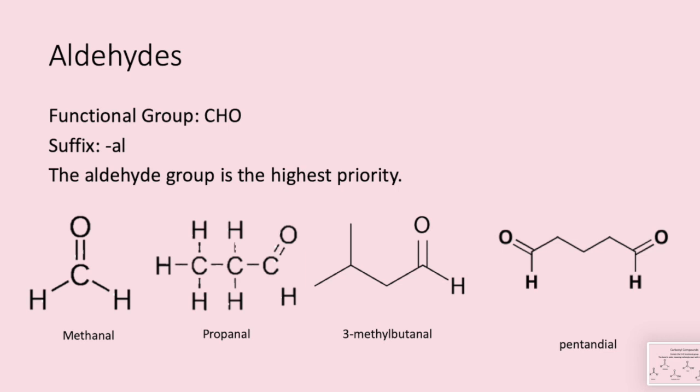Finally, example number four is a bit different. First we count the number of carbons — there are five, therefore it has the stem pentan-. It has two aldehyde groups, so we call it pentanedial.